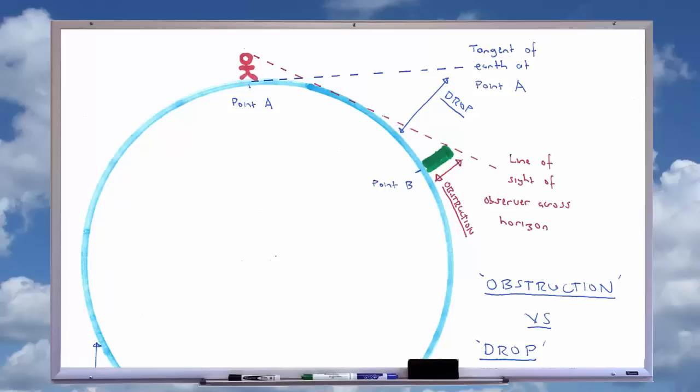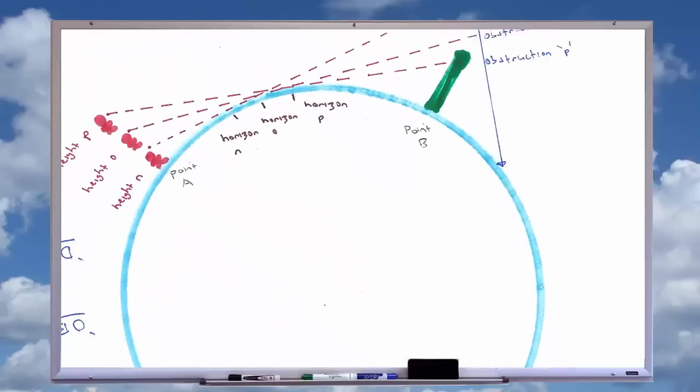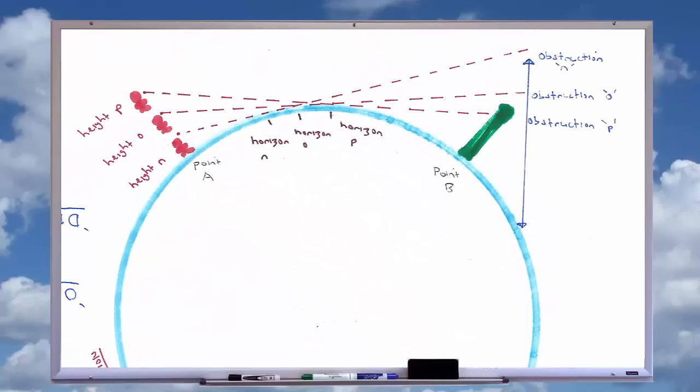Therefore, it is useful to distinguish between the drop and the obstruction. As the observer rises from literal surface level, the drop from the tangent across a given distance remains the same, but the obstruction of the observer's view decreases.